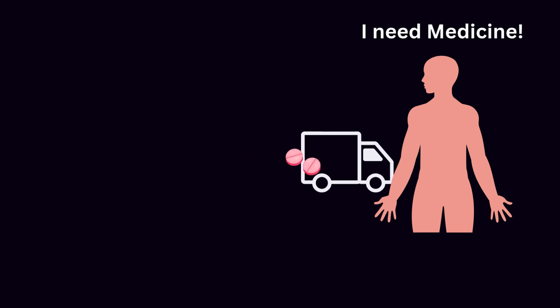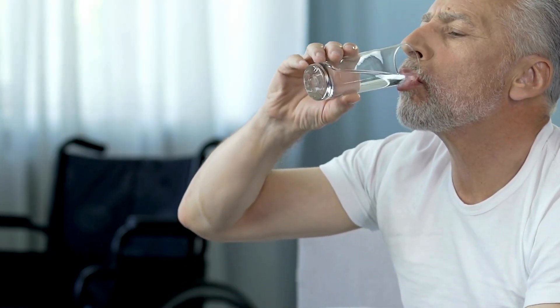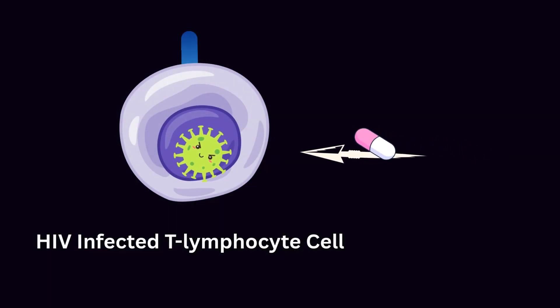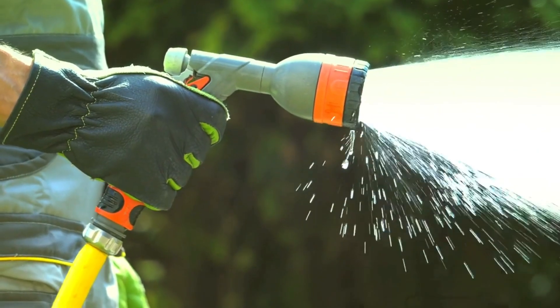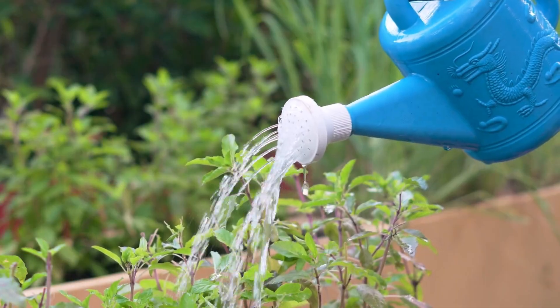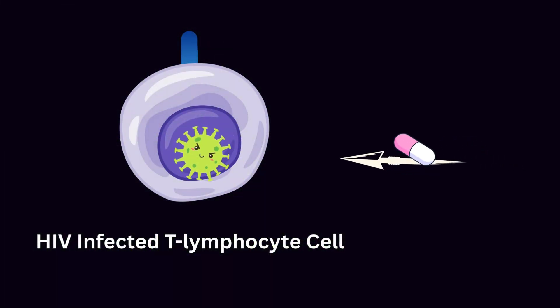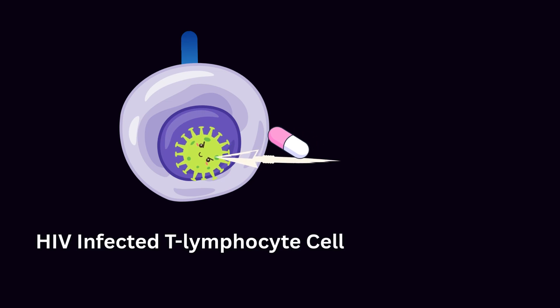Why it works: At its core, nanotechnology works because it changes the rules of delivery. Instead of dumping drugs into the bloodstream and hoping enough reach the target, nanocarriers are designed to seek out the virus and attack it in place. Think of it as the difference between spraying water over an entire field and using a hose to water only the plants you want. The precision not only improves effectiveness, it also reduces side effects.